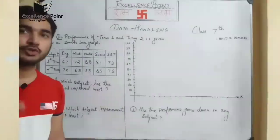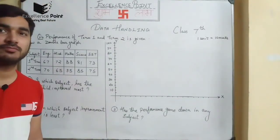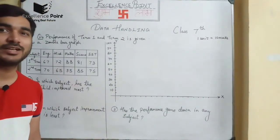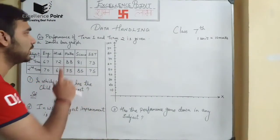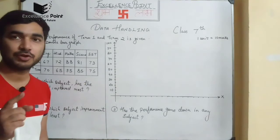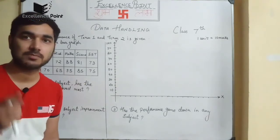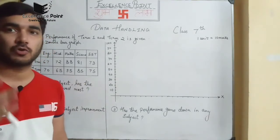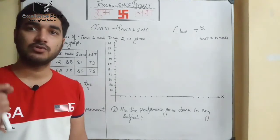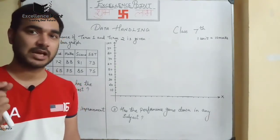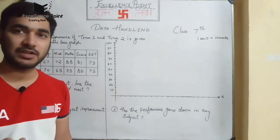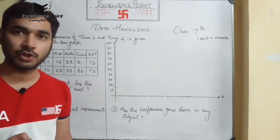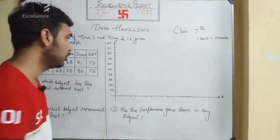Question number 4 is a little different — you have to draw a double bar graph. A double bar graph question may come in 4 marks. First I will draw the graph and then we will answer the following questions.